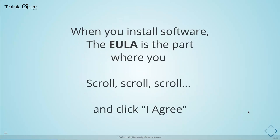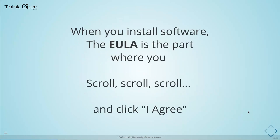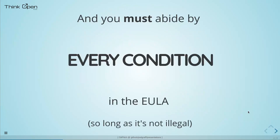In the software industry we call this the End User License Agreement, or EULA. The EULA is that legalese you come to when installing software that makes you scroll, scroll, scroll and click 'I agree' — nobody ever reads it. But the fact is you must abide by every condition in that EULA so long as it's not illegal, if you want to use that software legally. If you violate those conditions, the vendor has the right to revoke your license or even take you to court.